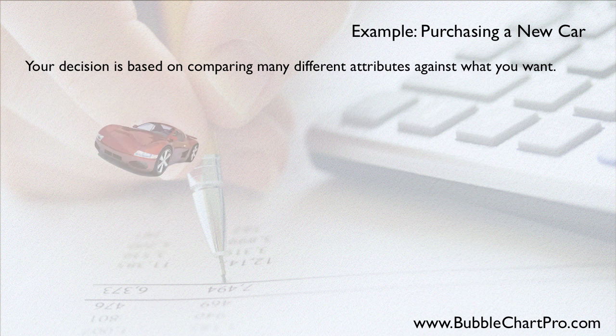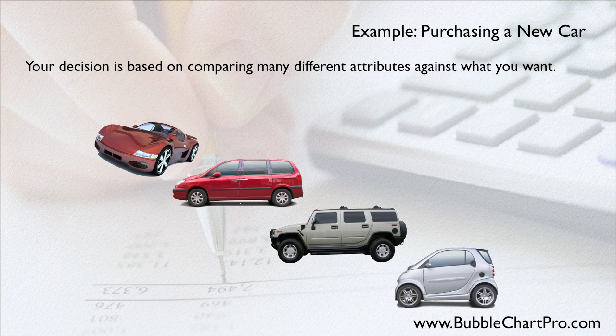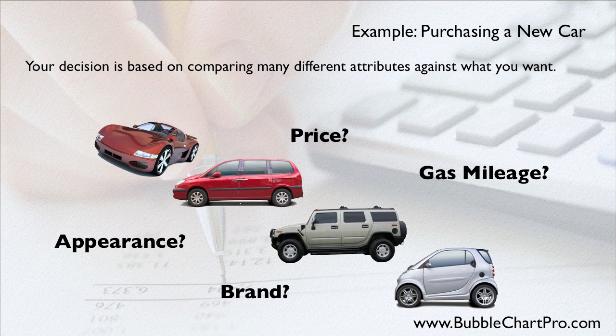We will start by using a simple car buying decision as an example. When you are making a purchasing decision, you are comparing many different buying criteria, such as price, appearance, gas mileage, and brand, so buying a car is a multi-criteria or multi-attribute decision. The criteria or attributes that you use can be used to compare different cars no matter if the car is a fast, expensive race car, a large minivan, an SUV, or an economical compact.